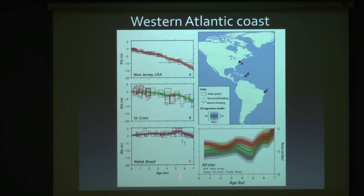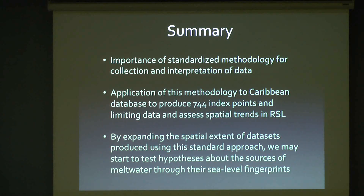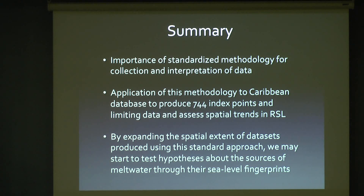Thinking back to the change in rates, going further south we have a decrease in rates of change along the latitudinal gradient. This is consistent at around six to four thousand years before present with a Greenland advance and retreat. To summarize: it's important to use a standardized approach when collecting relative sea level data so that you can pair sites across the globe. I showed an application of this methodology in the Caribbean region and the application of this hierarchical statistical model and its power in assessing spatial trends and rates of change in relative sea level. Finally, if we can expand these data sets with better resolution and better spatial coverage, it's a way forward to test hypotheses about sources of meltwater through ice sheets and sea level fingerprints.